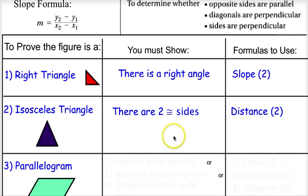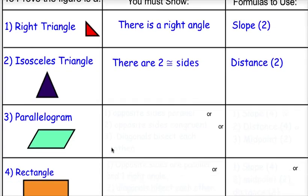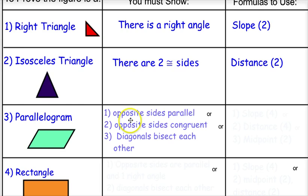If I wanted to show something is equilateral, I would show all three sides are congruent. For a parallelogram, there are different ways to prove it — some easier than others — and there are three methods. I can show the opposite sides are parallel, I can show the opposite sides are congruent to each other, or I can show the diagonals bisect each other. Sometimes they may tell you to do it a specific way; if they don't, it's up to you.